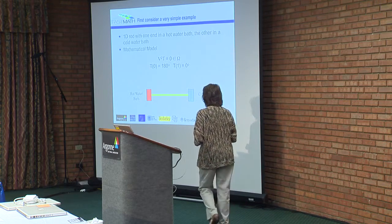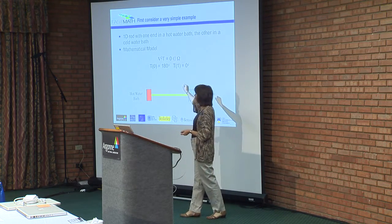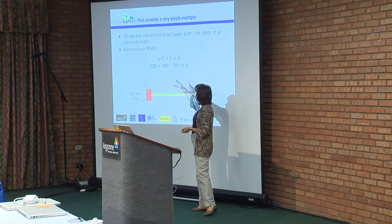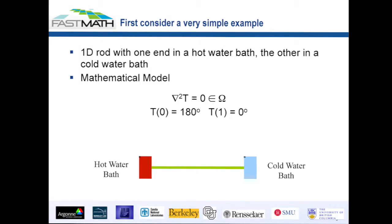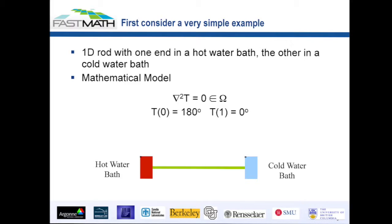What does that mean from a mathematics perspective? It turns out you can model that with a very simple partial differential equation called a Laplacian, represented by delta squared T equals zero. Then you have boundary conditions — maybe it's 180 degrees in the hot water bath and zero degrees in the cold water bath. That's your continuous model and your domain. The very first thing you want to do is approximate that continuous model with some discrete model by breaking the domain into an array of points and representing the Laplacian with a discrete representation.